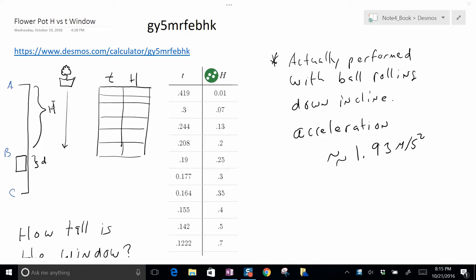To model this, I had students not drop flower pots because that gets messy and the acceleration is too fast, but roll marbles down an incline, sort of like a ramp. They measured the time to go by the window, the height of the window, and they have h. So what I had them do is use this data to try to work out how high was that window.